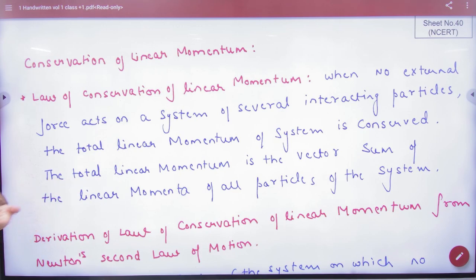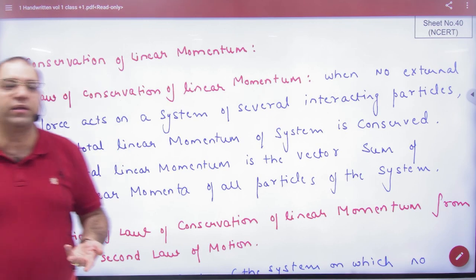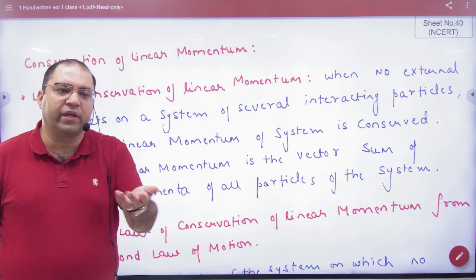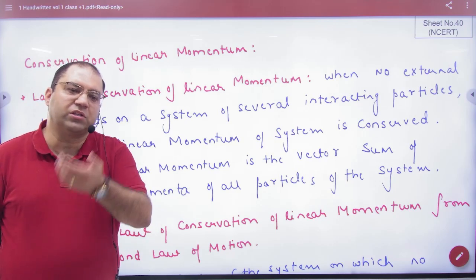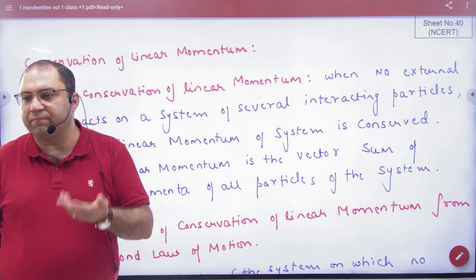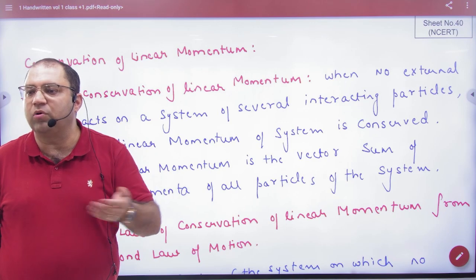So what did we do in the example of bullet and gun — the vector sum? We wrote M1V1 vector, or M1V1 plus M2V2, or M1V1 vector equal to M2V2 vector. We said that the total linear momentum vector sum of all the particles is equal to zero.